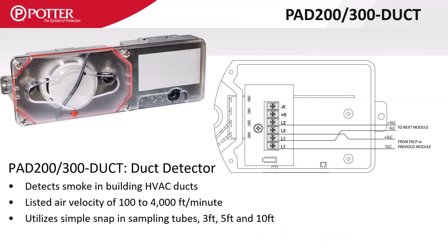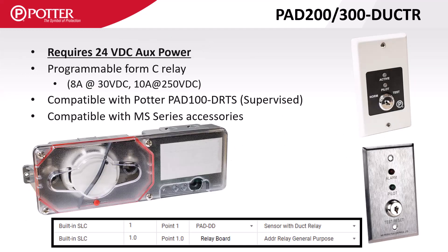POTR offers two models of duct detector. The PAD Duct is a simple SLC duct detector; the housing does not include a built-in relay, and there is no remote test station compatible with this detector. The PAD Duct-R does have a built-in relay, but it also requires 24 volts auxiliary power due to the higher amperage relay and the ability to have either a PAD DRTS or an MS Series remote test switch wired directly to the detector.